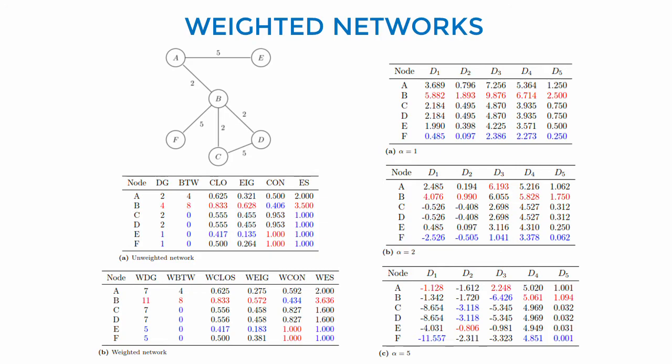Node A becomes the most important, because we are penalizing more the connections towards non-peripheral nodes. We can additionally compare the rankings produced by the distinctiveness centrality on the right with those produced by the other metrics on the left.